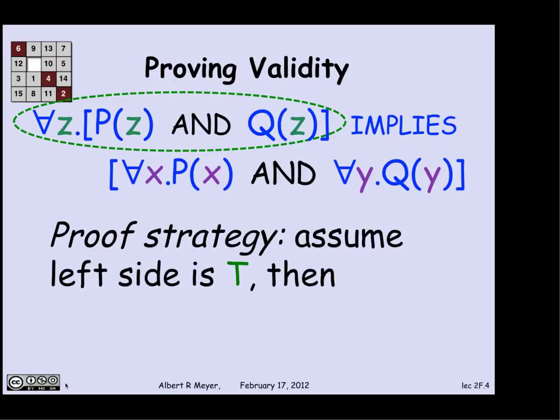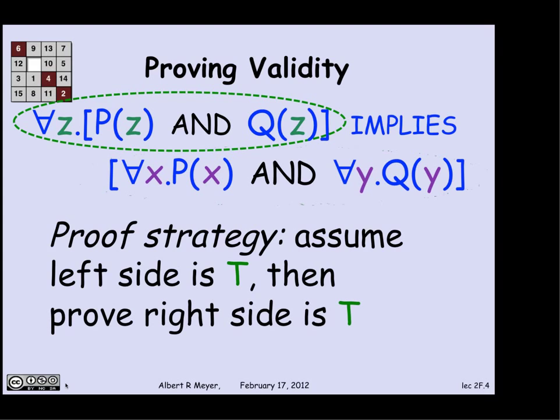That is that for every z, P of z holds and Q of z holds. And then I'm going to try to prove, based on that, that the consequent holds, namely that the right-hand side for all x P of x and for all y, Q of y holds.